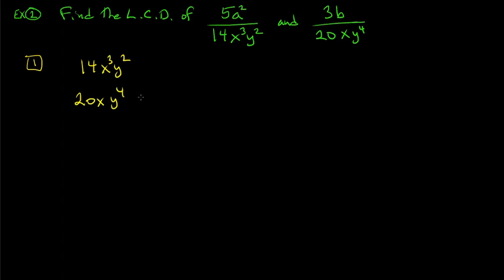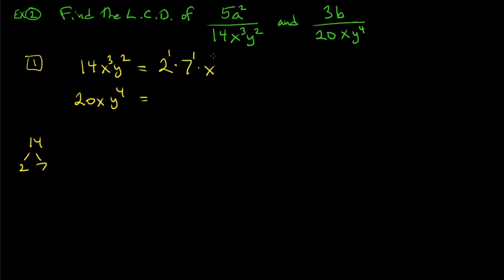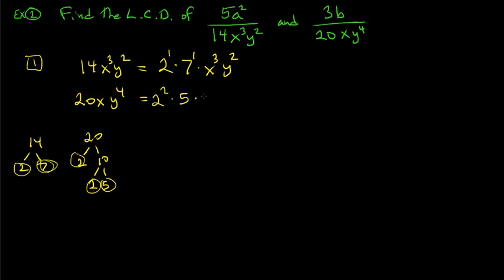We only need to factor the numerical coefficients. 14 is 2 to the first times 7 to the first, times x cubed times y squared. 20 is 2 times 10, and 10 is 2 times 5, so 20 is 2 squared times 5, times x to the first times y to the fourth.